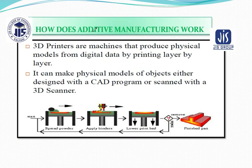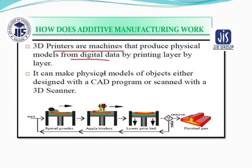How does additive manufacturing work? 3D printers are machines that produce a physical model from digital data by printing layer by layer. The physical object can be made from either a CAD program or by scanning with a 3D scanner.